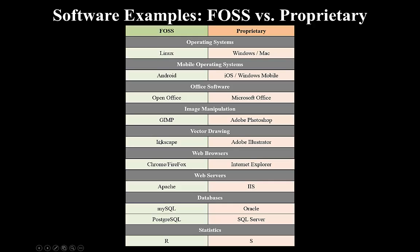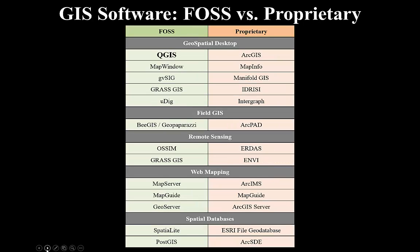Looking at the same chart focused on geospatial software: for geospatial desktop software, ArcGIS is the leading proprietary software vendor. In this course, we're going to be focused on QGIS, which is the leading open source desktop software. We'll also use a little bit of GRASS GIS. There are also open source alternatives for field GIS data collection, remote sensing, web mapping, and spatial databases — and we'll touch on some of those spatial databases in this course as well.